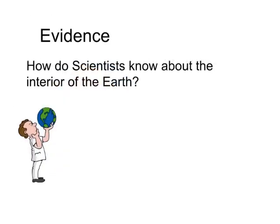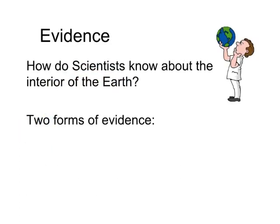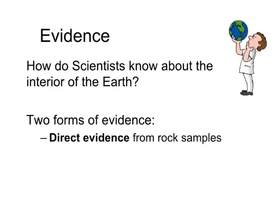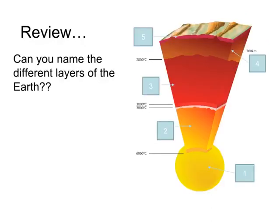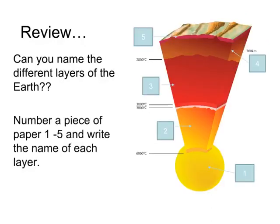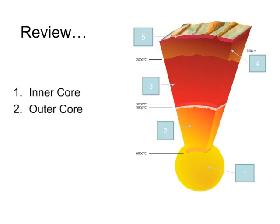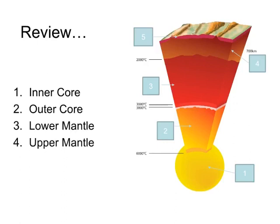How do scientists know about the interior of the Earth? There are two forms of evidence: direct evidence from rock samples, and direct evidence from seismic waves. Can you name the different layers of the Earth? Number a piece of paper 1 to 5 and write the name of each layer: inner core, outer core, lower mantle, upper mantle, and crust.